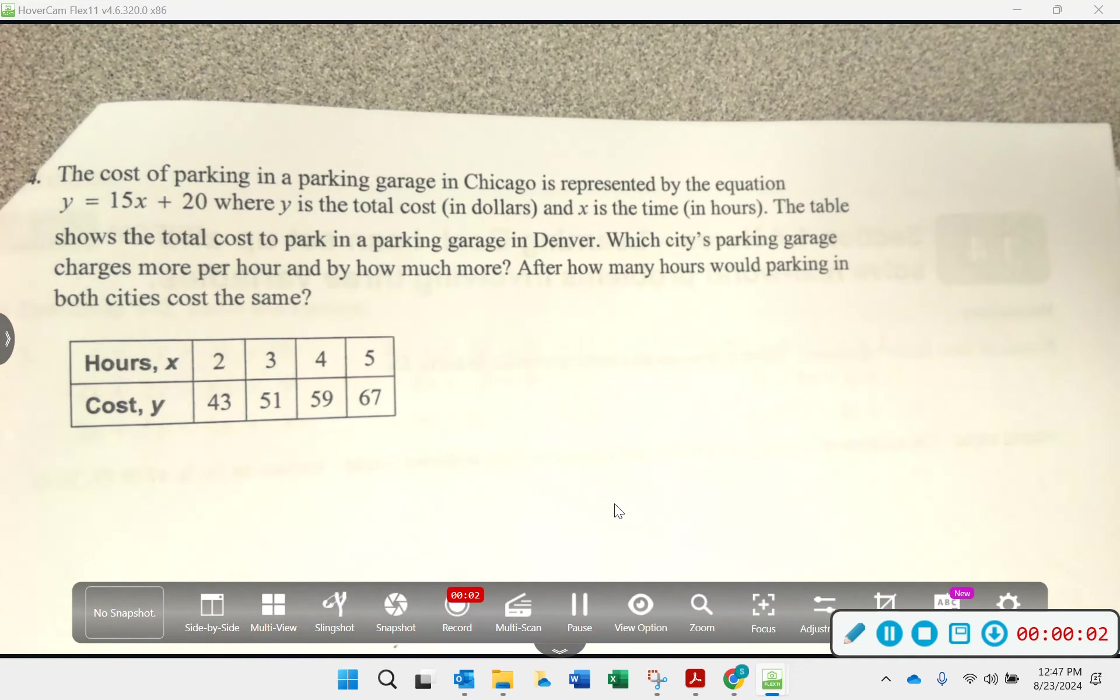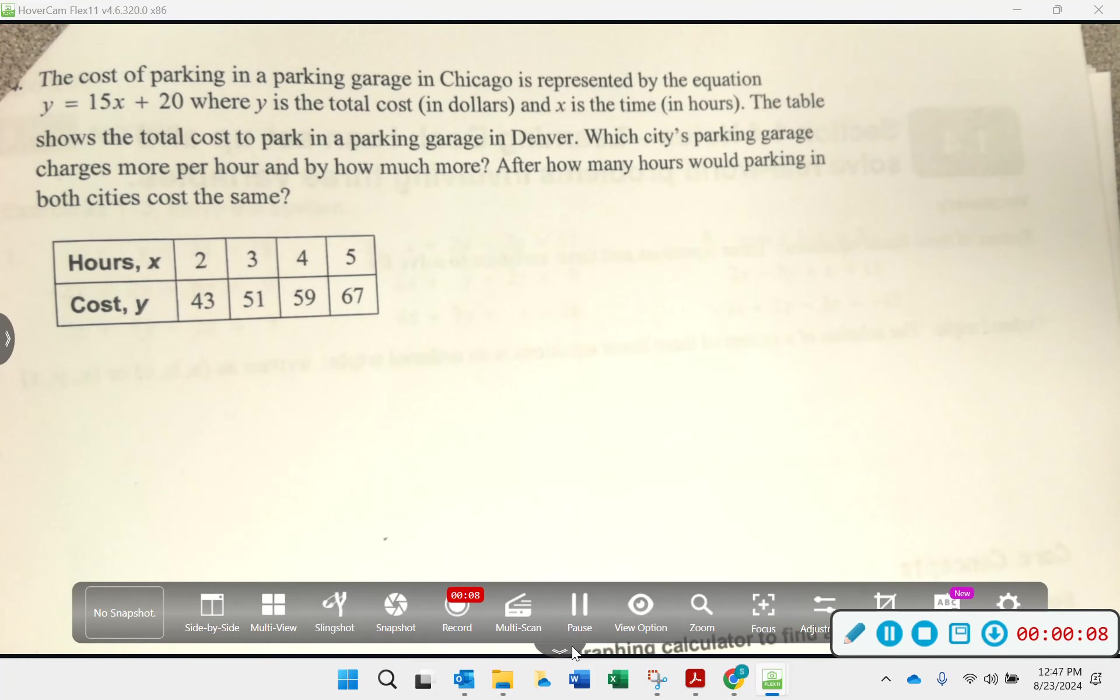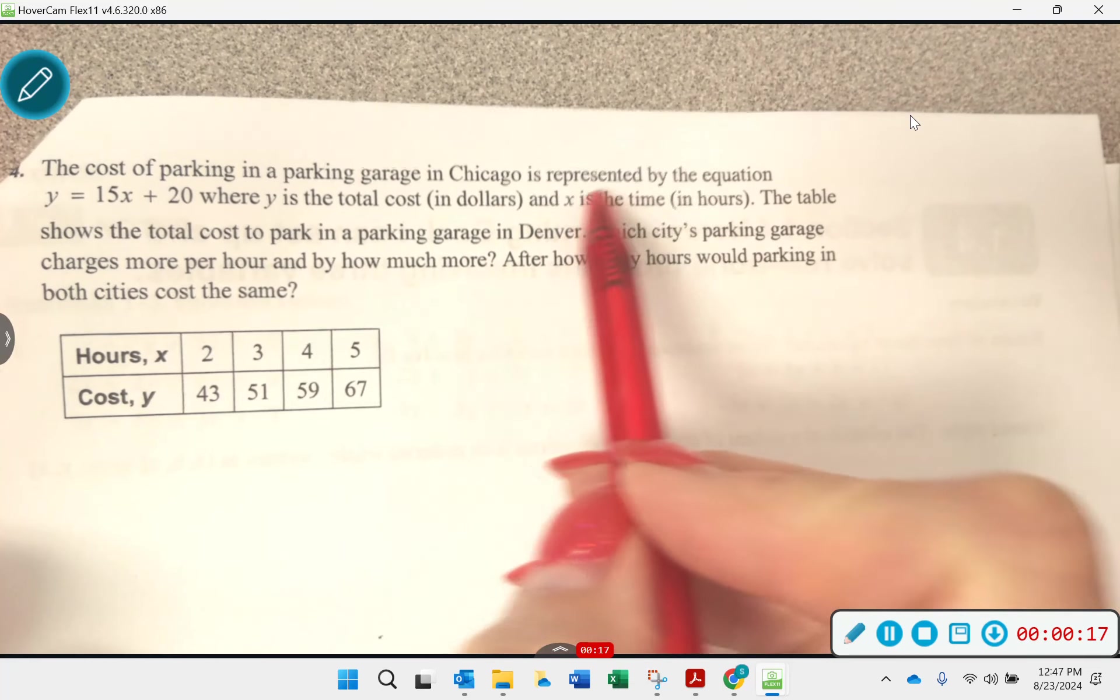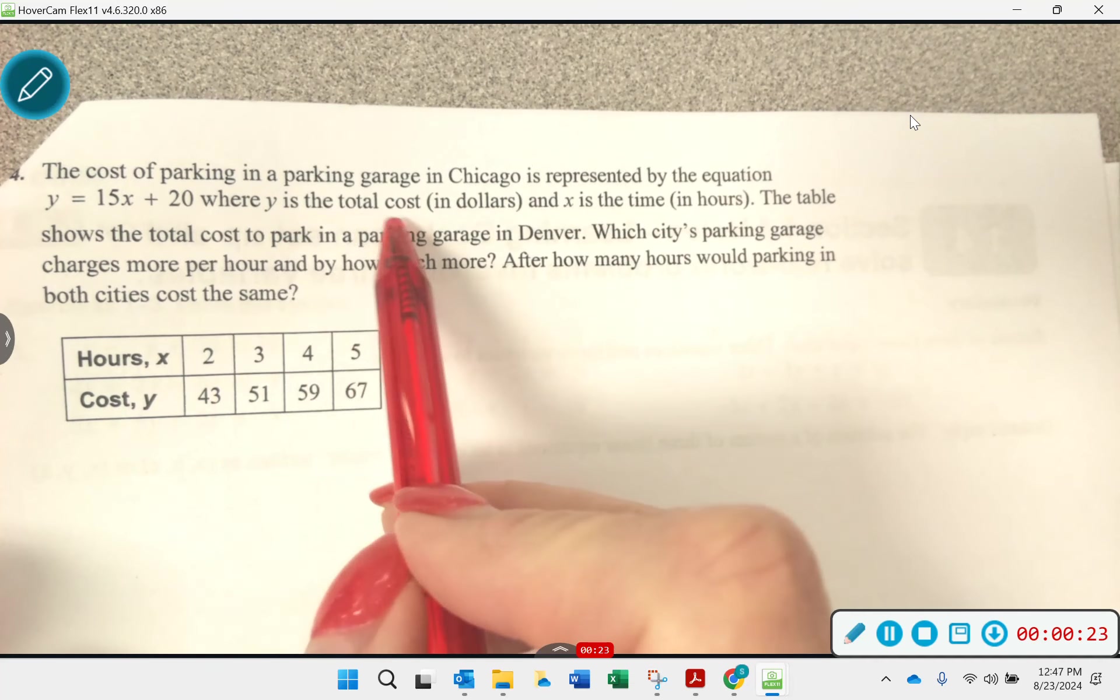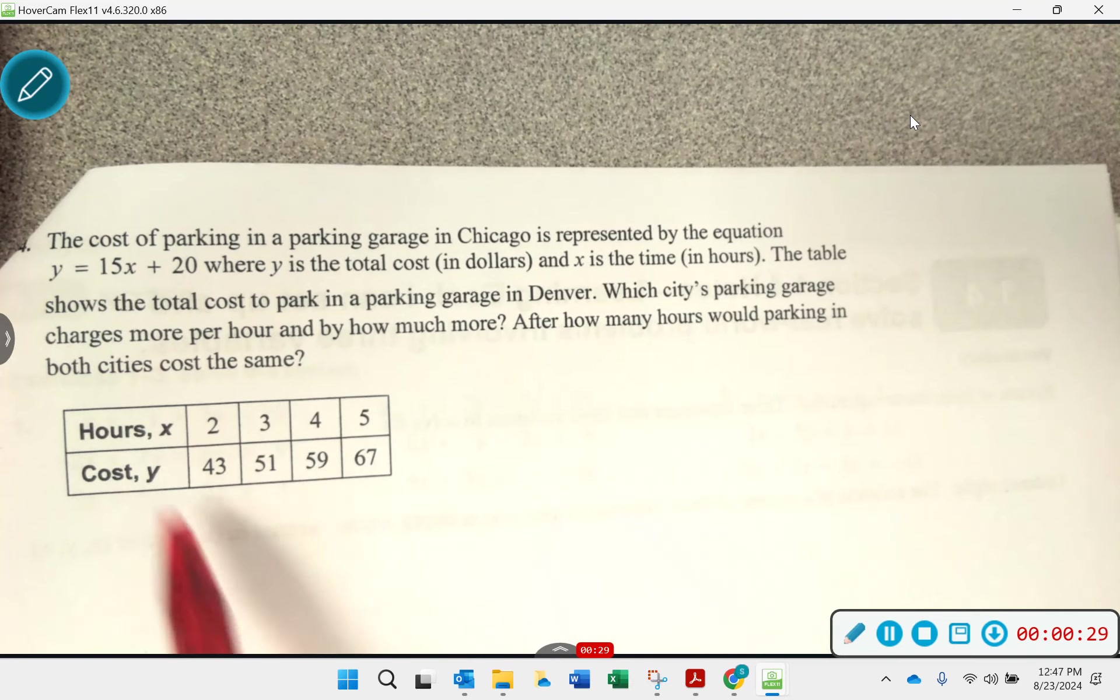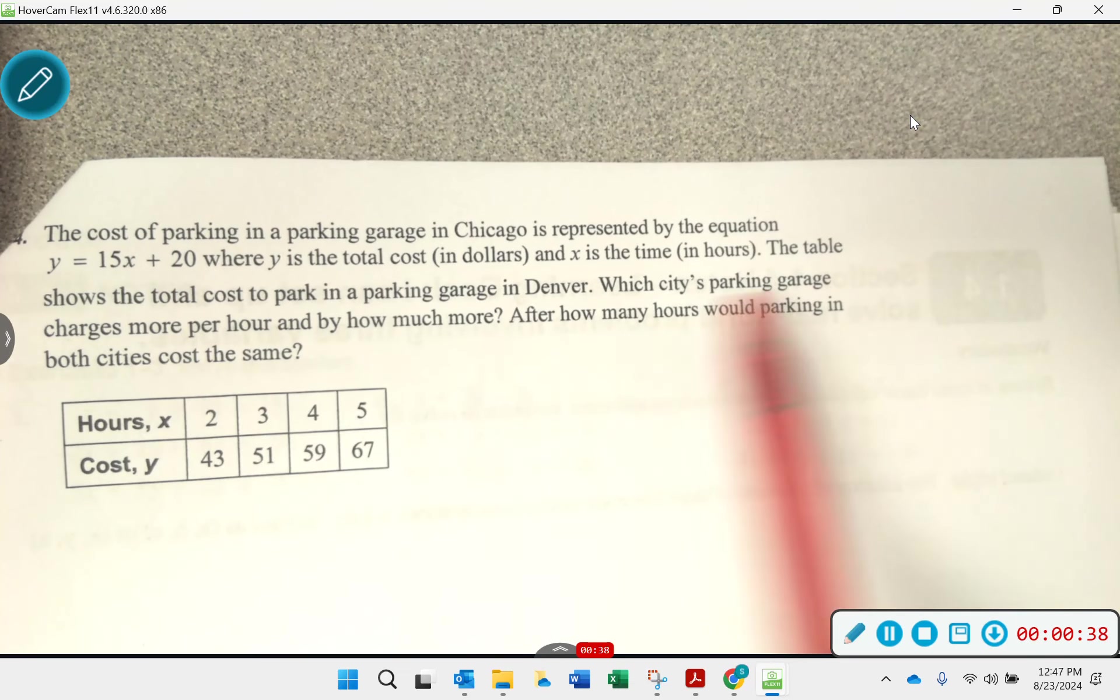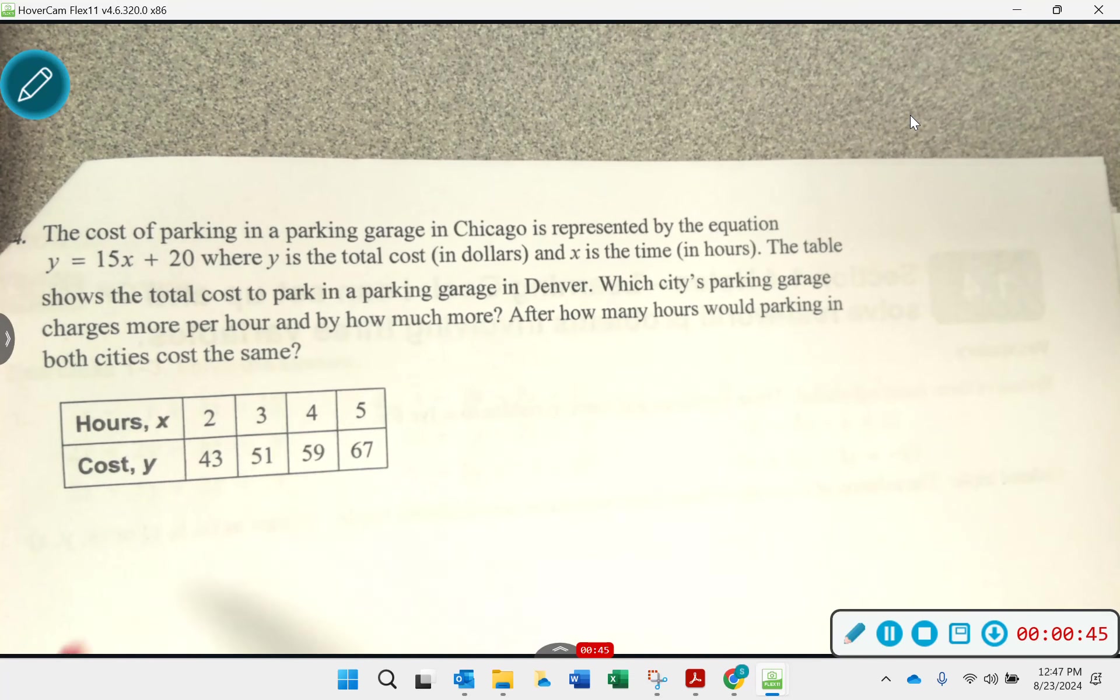Let's push up our notes. These are the notes over section 1.3. We're going to take a look at a couple of problems and then even review a little bit some other concepts. So looking here at section 1.3, number four, it says the cost of parking in a parking garage in Chicago is represented by the equation y equals 15x plus 20, where y is the total cost in dollars and x is the time in hours. The table shows the total cost to park in a parking garage in Denver. So this is Chicago, this is Denver. Which city's parking garage charges more per hour and by how much more? After how many hours would parking in both cities cost the same?